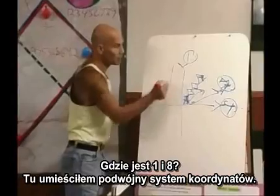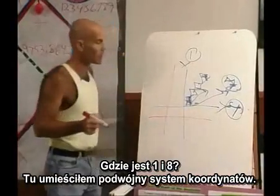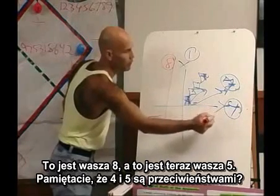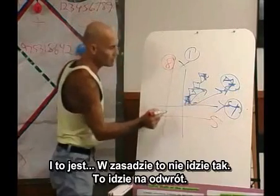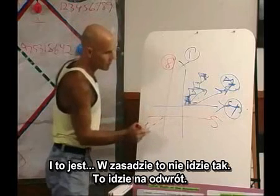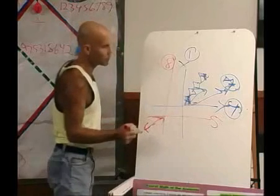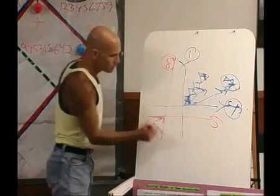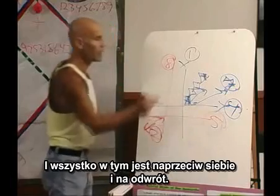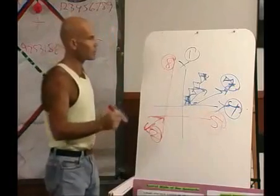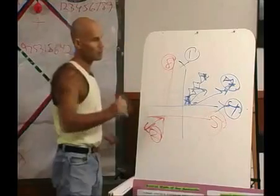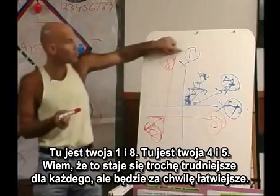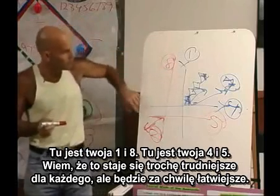Where is the one and eight? Here — I superimpose a double coordinate system. This is your eight. This is now your five. Remember four and fives are opposites? And this is going to reverse. This is your two. And everything about them is opposite and reverses. There's your eight and one. Here's your four and five.